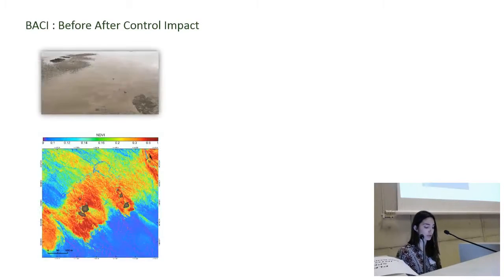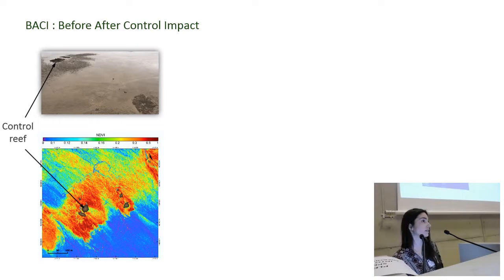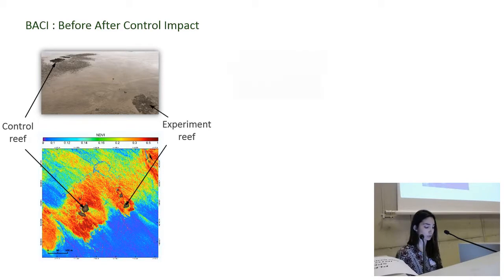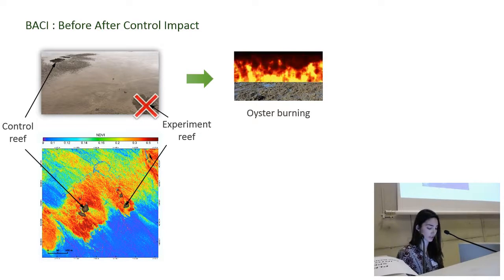In order to confirm that this effect was really linked to the presence of live oysters and not, for example, to the structure of the reefs, a before-after control impact experiment was conducted on two reefs. One was selected as a control reef, and the experiment took place on the other one — an experiment which consisted in the burning of the oysters so as to eliminate the organic matter without affecting the reef itself.